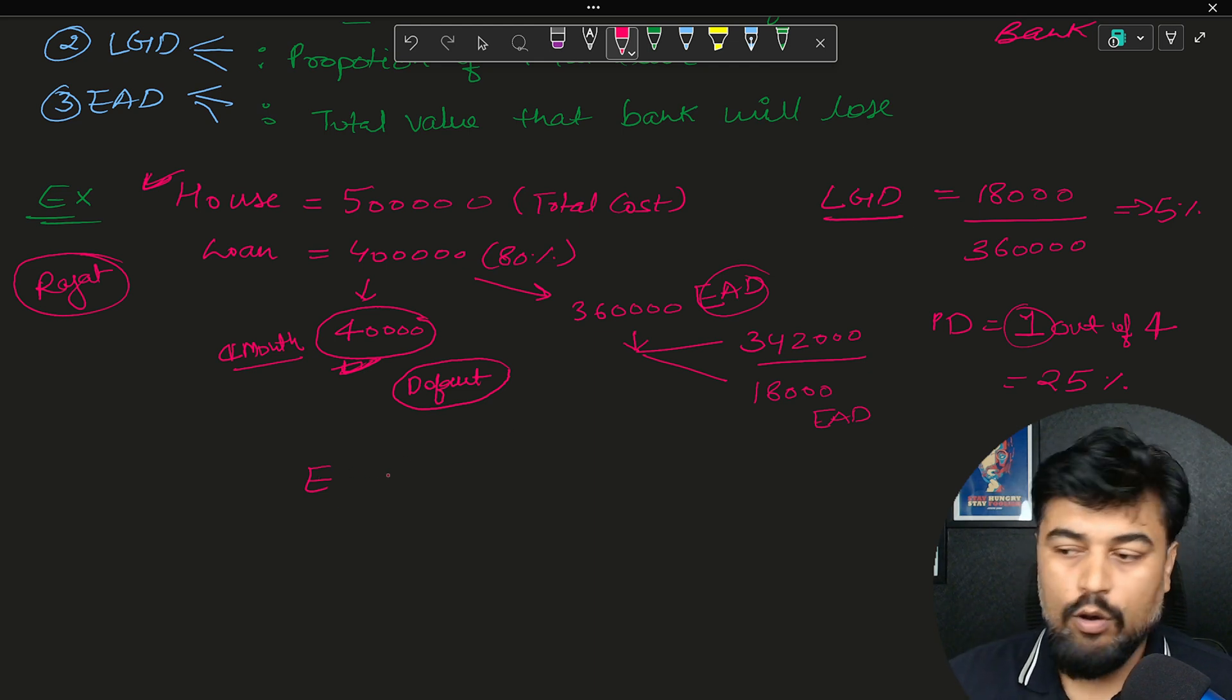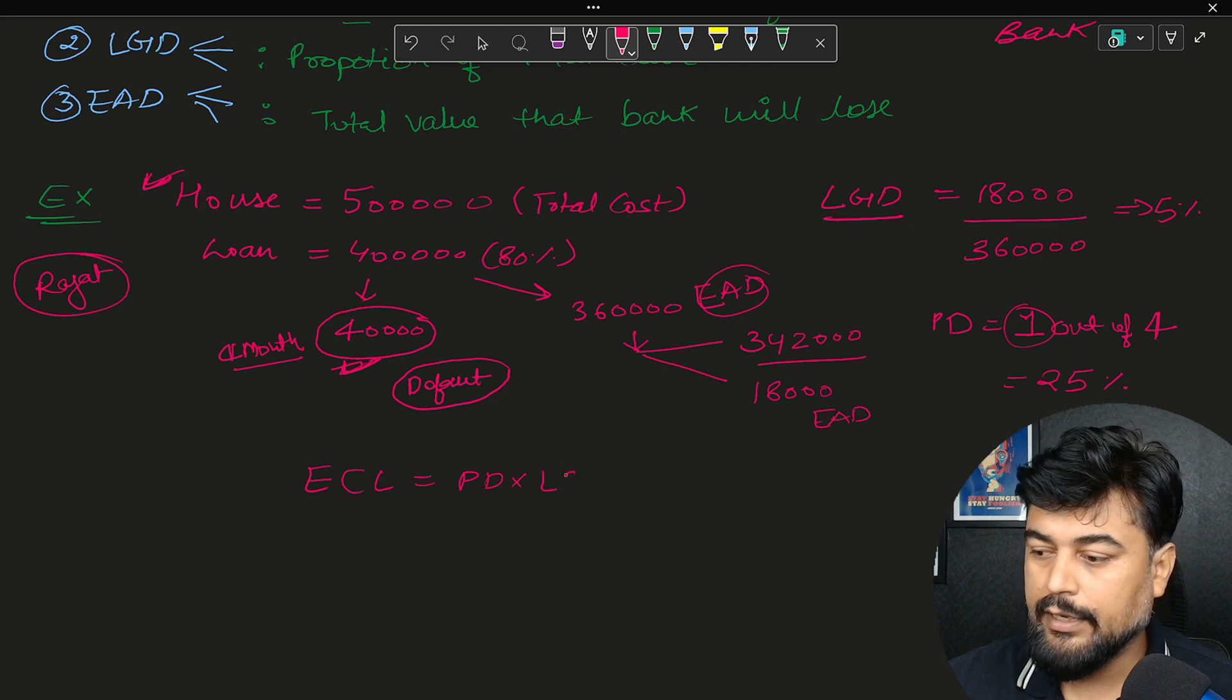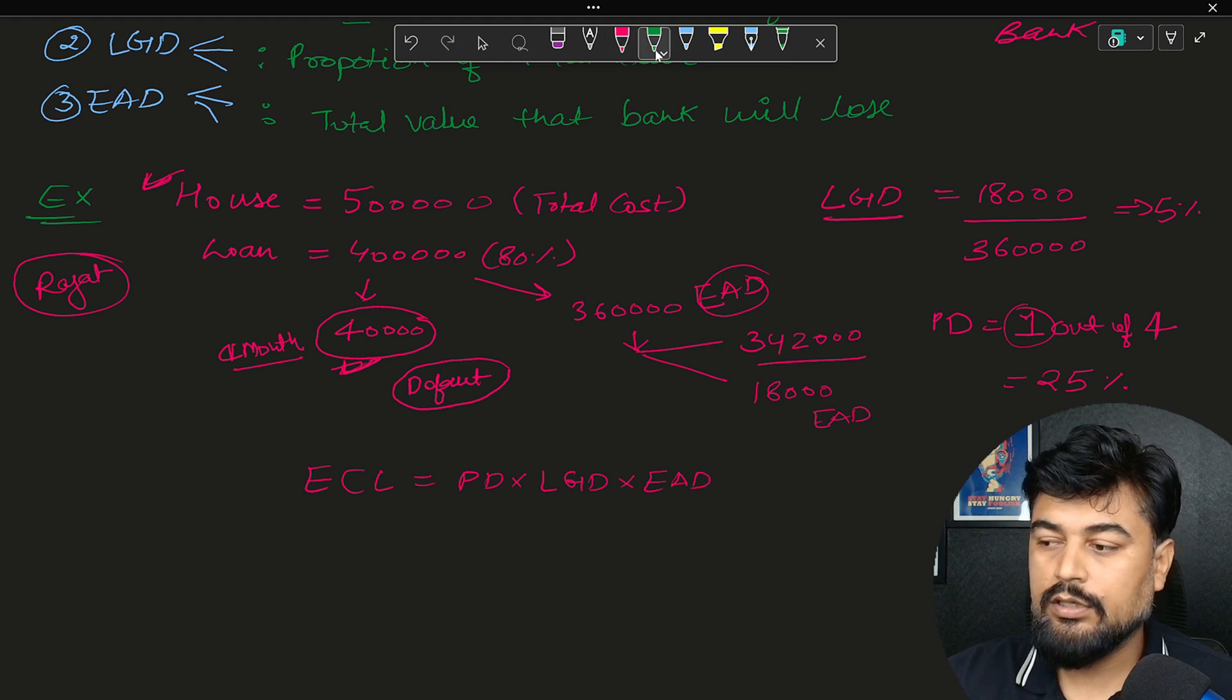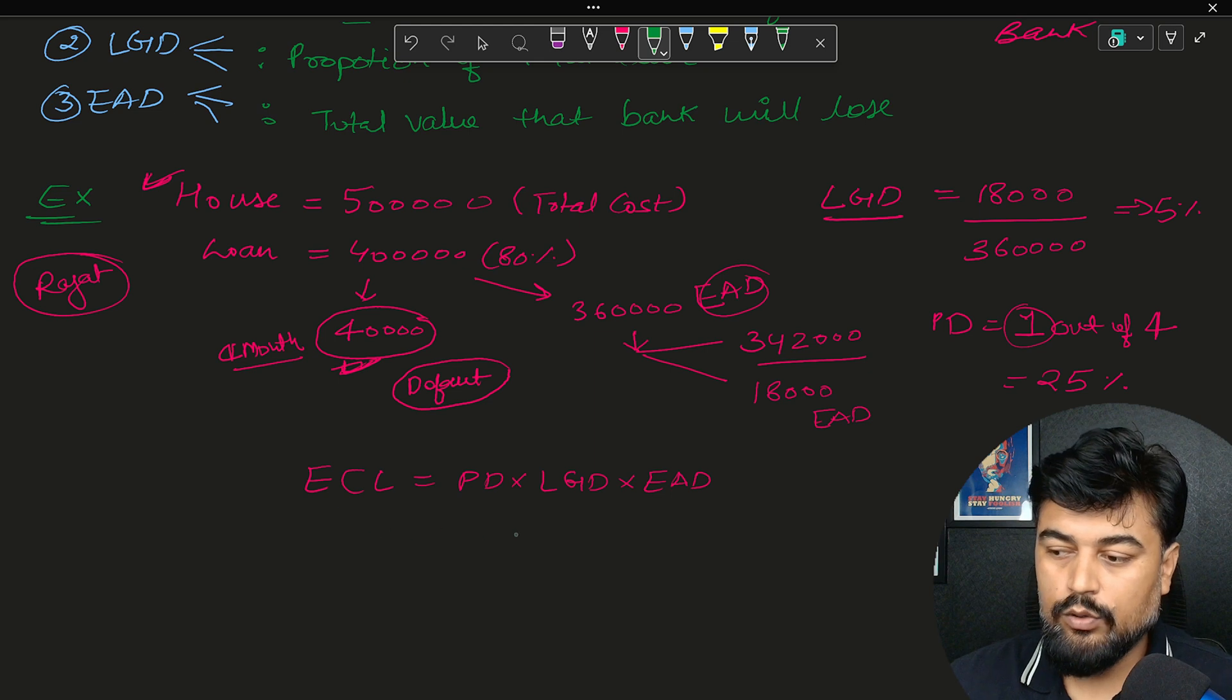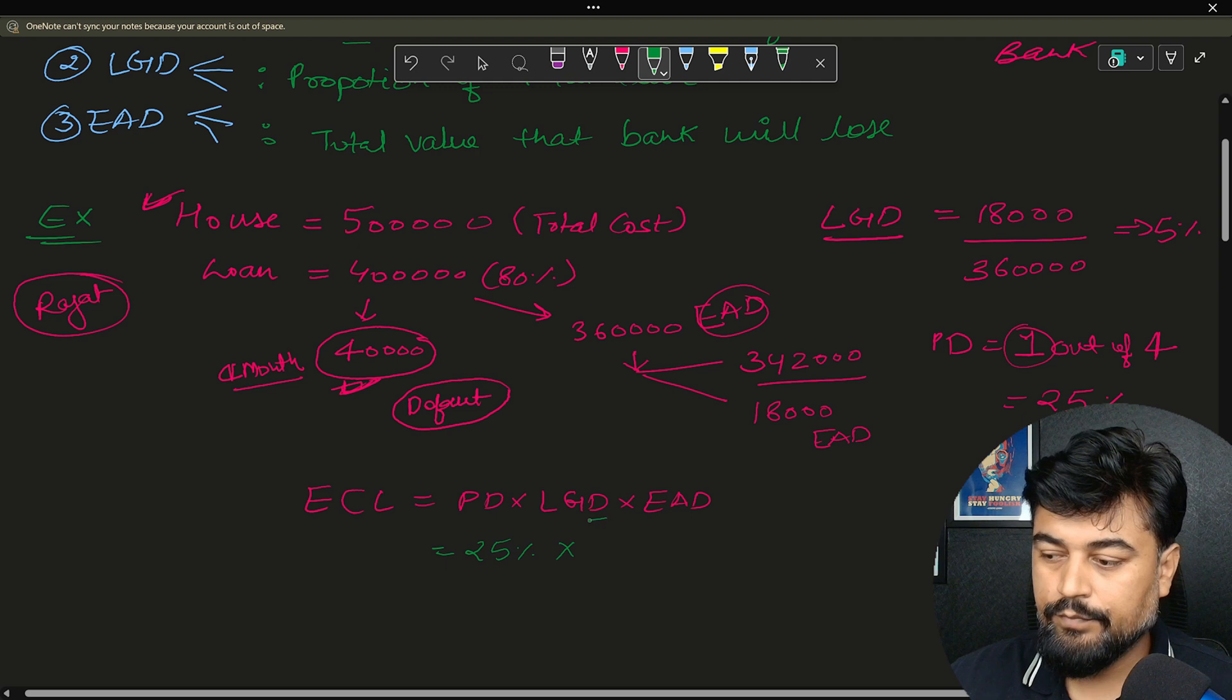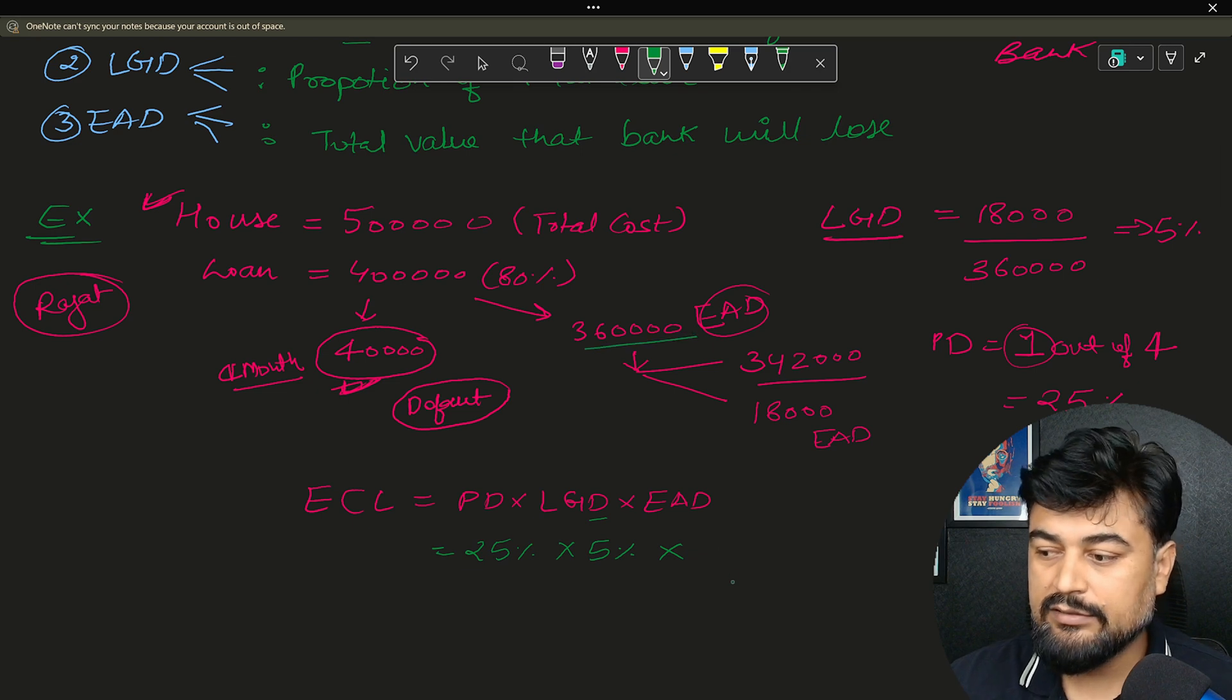All of these things we will implement in Python also very soon. But let's focus on the basic formulas now. So ECL will be equal to PD multiplied by LGD multiplied by EAD. That's how things function. Now ECL equals 25% multiplied by what is LGD? You can see it's 5% and what was the total EAD? That was 3,60,000.